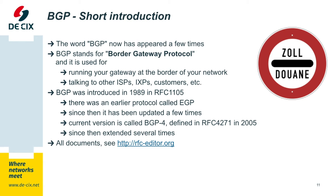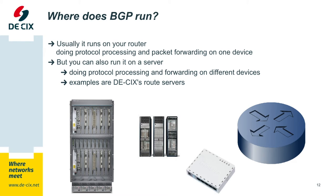You can download and read them, and most of the time they are written in a way that everybody can understand them. Where does BGP run? It usually runs on a router, doing protocol processing and packet forwarding on exactly one device. But you can also run it on a server — for example, at DE-CIX we run BGP on our route servers. The routers it runs on can be very, very small or very, very large. There are really cheap routers available which can run BGP, and one of the key requirements is that the router has to have enough memory to hold the full BGP routing table.